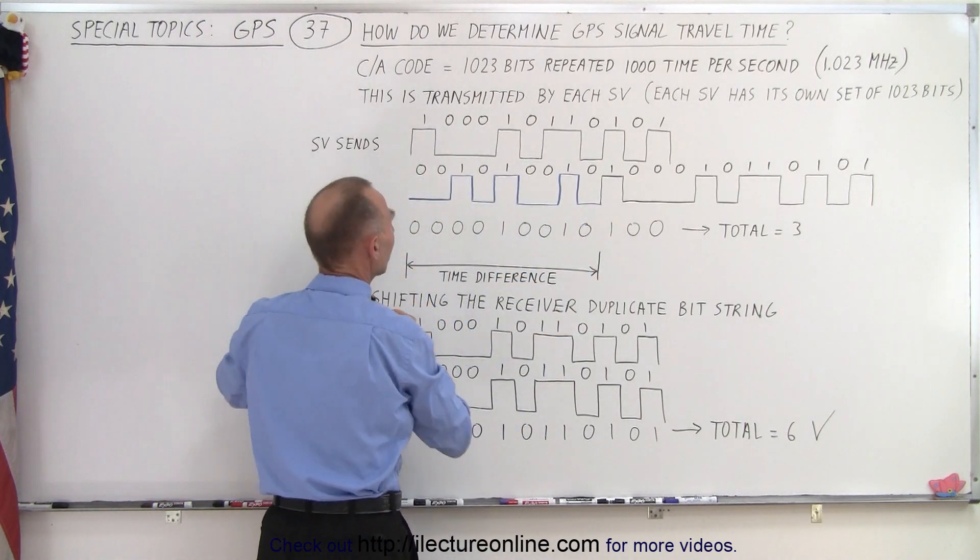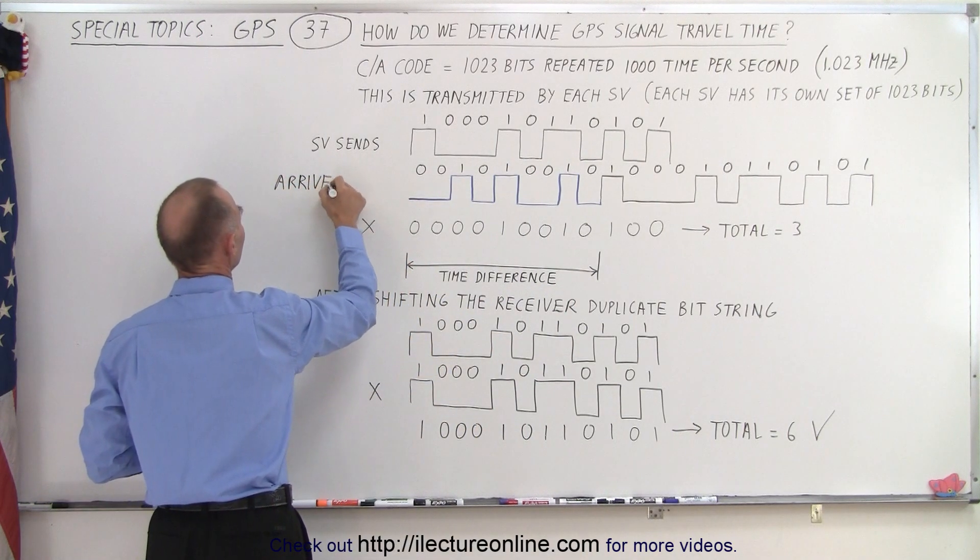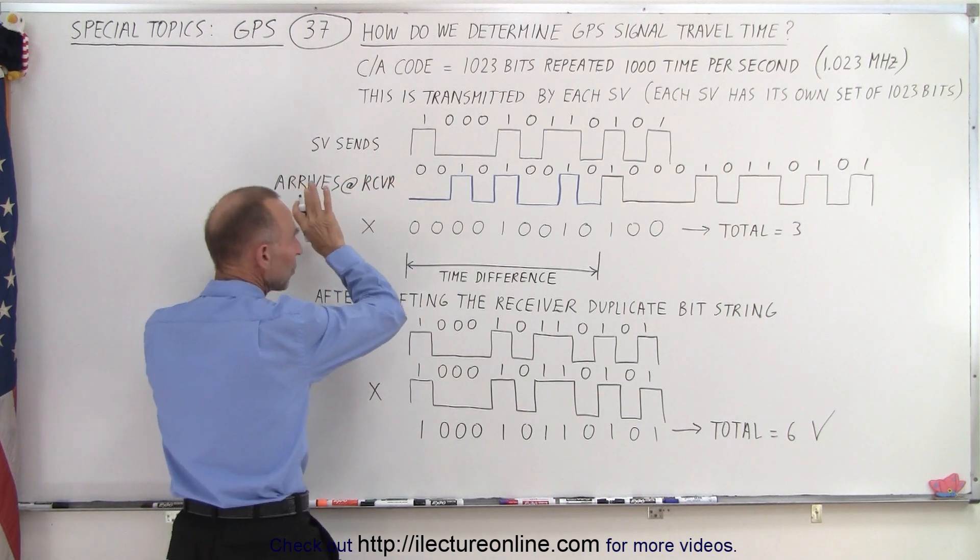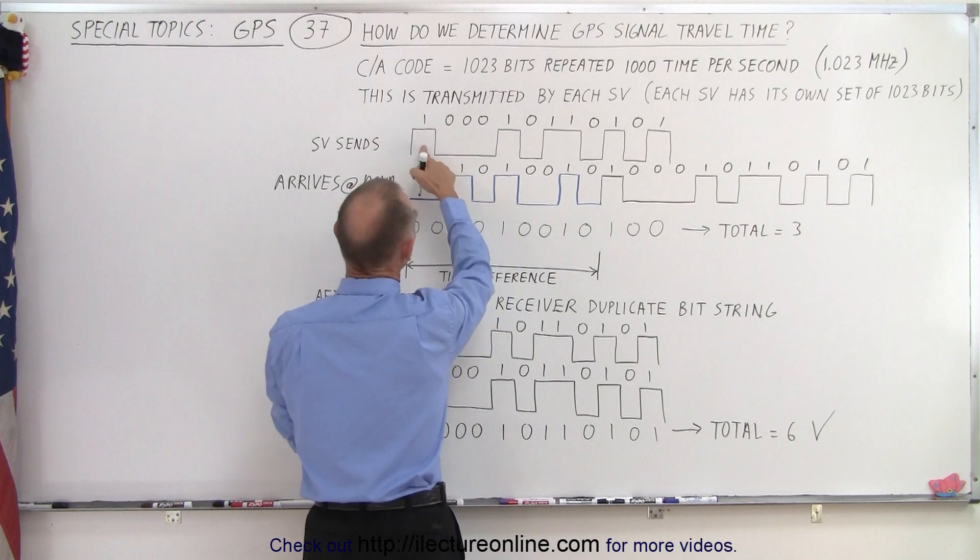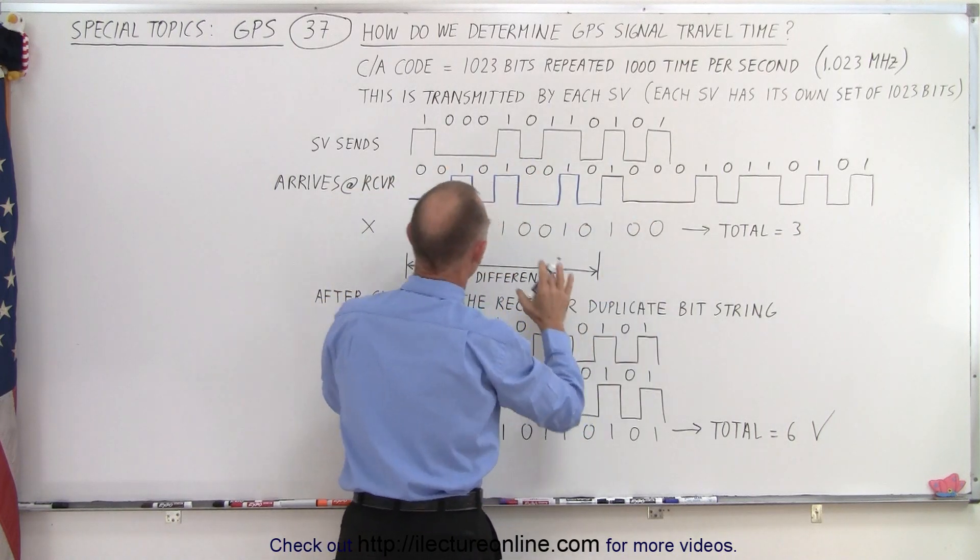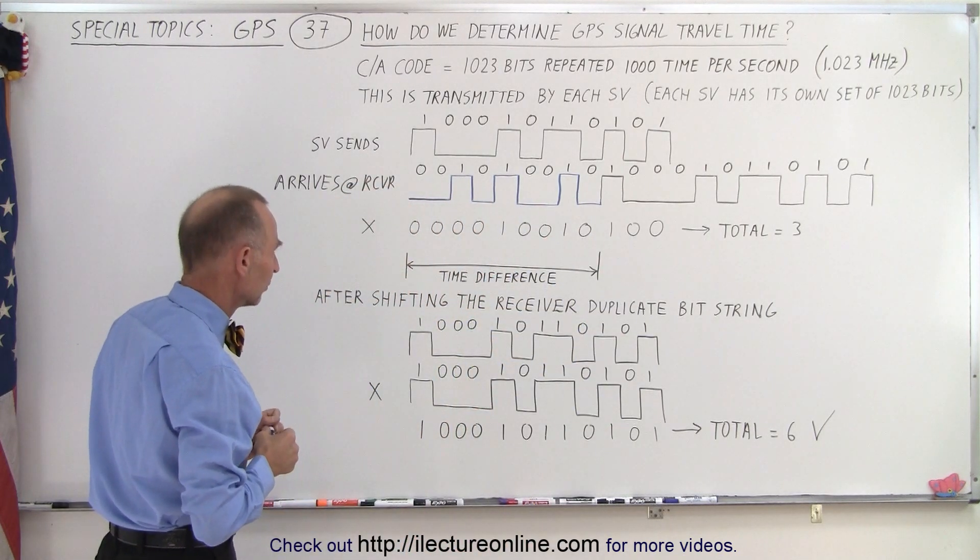By the time it arrives at the receiver, of course everything will have shifted in time. Notice that this one is now over here, this zero is now over here, and so forth, and so this would be another part of the bit string from the CA code.